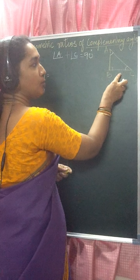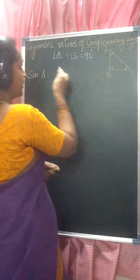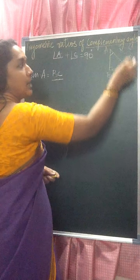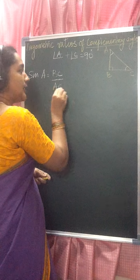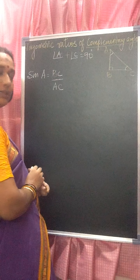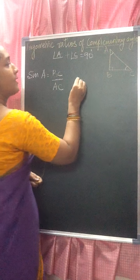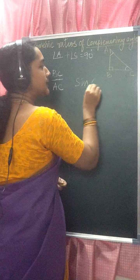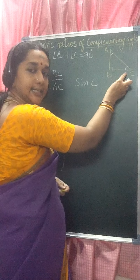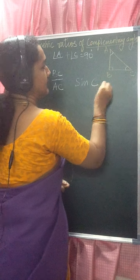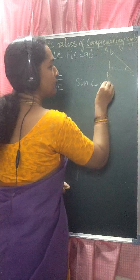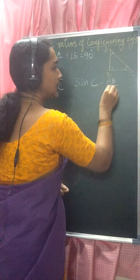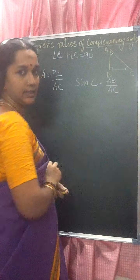For sine A, the opposite side is BC, so sine A equals BC by hypotenuse AC, which is BC/AC. Then for sine C, the opposite side is AB, so sine C equals AB by hypotenuse AC, which is AB/AC.